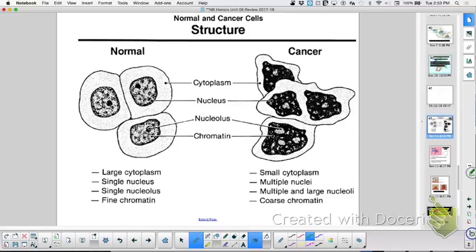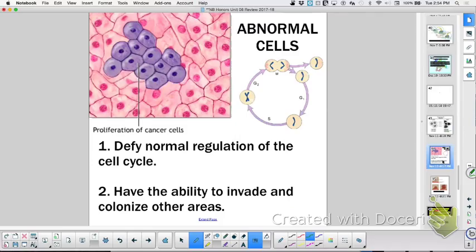You can look at the difference between cancer cells and non-cancerous cells. Here you can see a lot of nuclei, small cytoplasm, real coarse chromatin - it's typical of a cancer cell. It defies the normal cell cycle. Remember, the proto-oncogenes, if they go bad and become oncogenes, they say go cell cycle, go cell cycle, go. Normally a P53 gene would wipe out that bad cell.